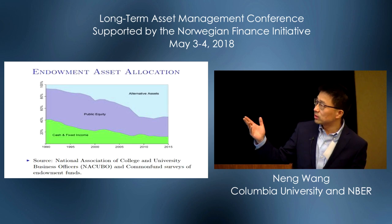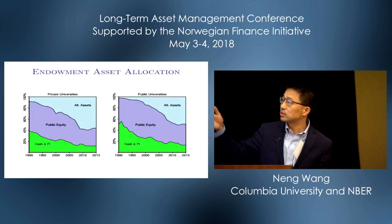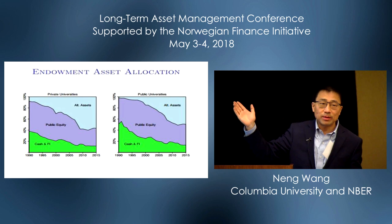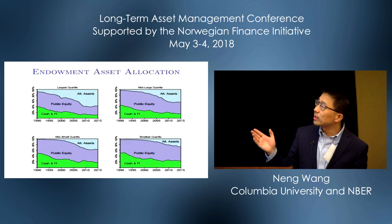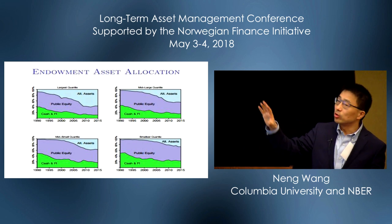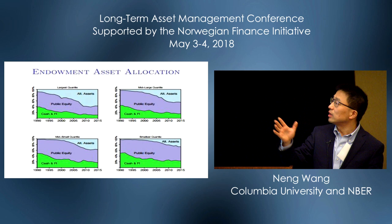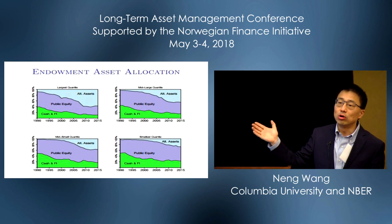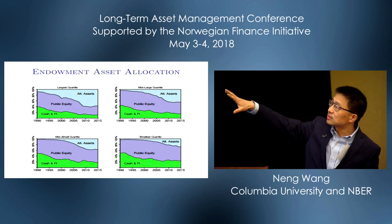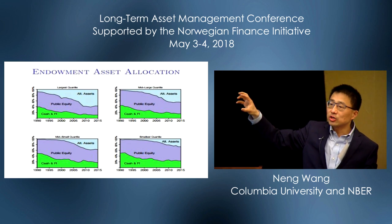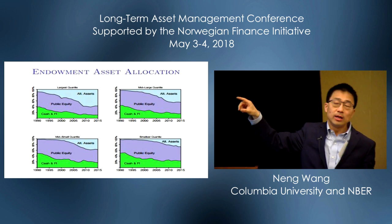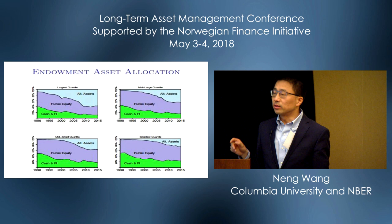Just to make sure this is a robust result — this is a university endowment sample — if you cut this between public and private universities, the same thing holds. If you cut it based on the size of the endowment funds, you see a little bit of variation perhaps, but by and large the direction is robust: allocations to alternatives have gone way up. As you would expect, large endowment funds tend to have a much bigger allocation percentage-wise compared to smaller endowments.